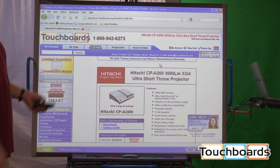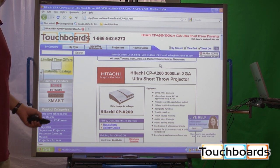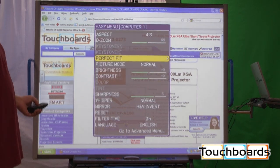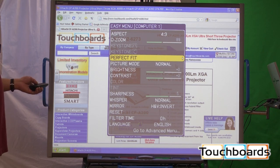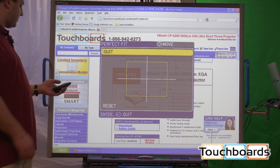Now with some other ultra short throw projectors, you'd be spending all day trying to fix that. With perfect fit, you're going to get it done in like two minutes. You select perfect fit, it pulls up this square.